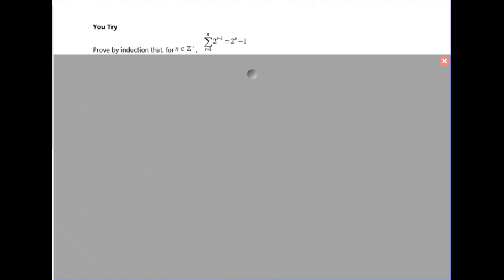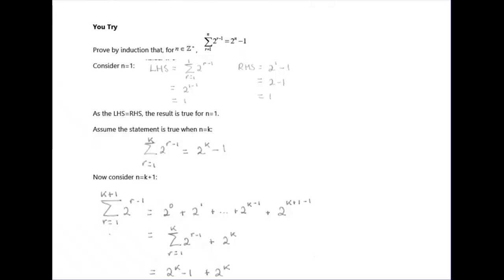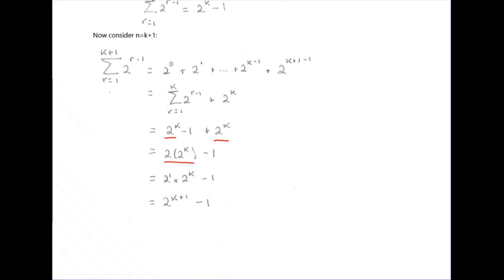Pause the video and have a go at the next question. Substitute n equals 1 to show it works to start off with. Assume it's true for n equals k and write it out. Now consider n equals k plus 1 and split this up into the sum from 1 up to k, plus 2 to the k, which you get from subbing k plus 1 into 2r minus 1. Notice there are two lots of 2 to the k, which is the same as 2 to the 1 times 2 to the k, so you can add those powers and get 2 to the k+1 minus 1.